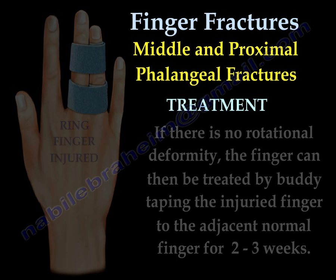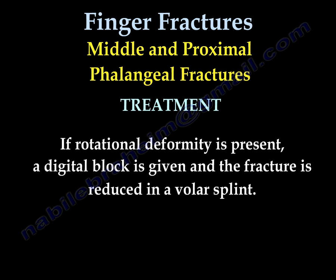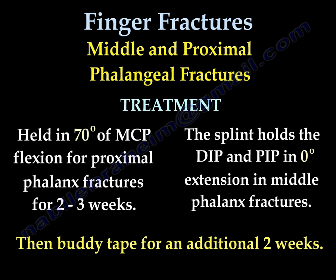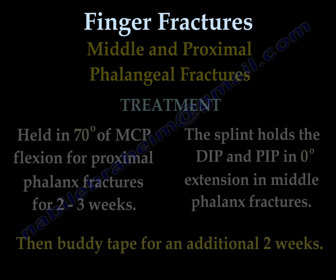If rotational deformity exists, a digital block is given and the fracture is reduced in a volar splint. We keep the MCP in 70 degrees of flexion for proximal phalangeal fractures for about 2-3 weeks. The DIP and PIP are kept at 0 degrees extension in middle phalangeal fractures, then buddy taped for an additional 2 weeks.